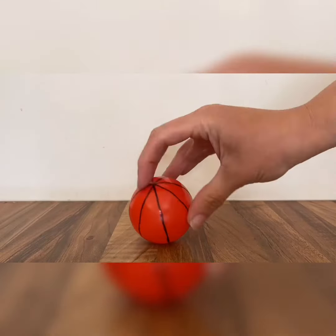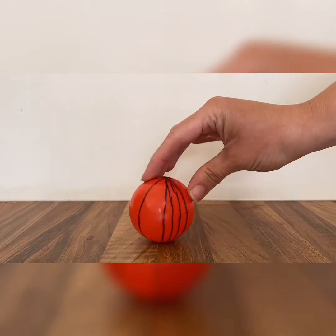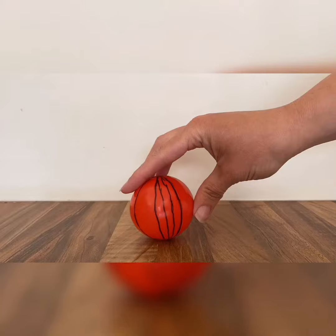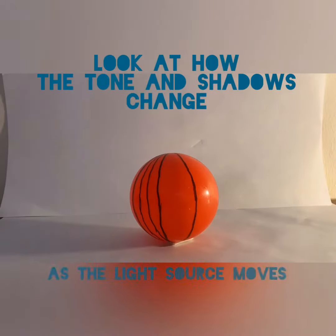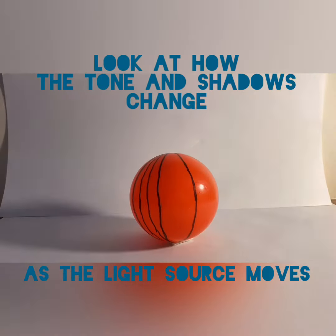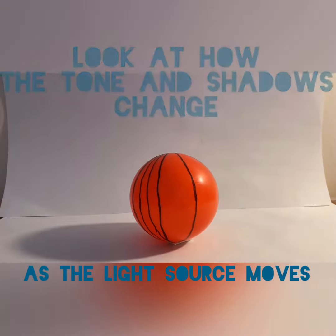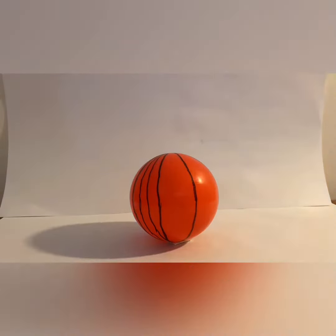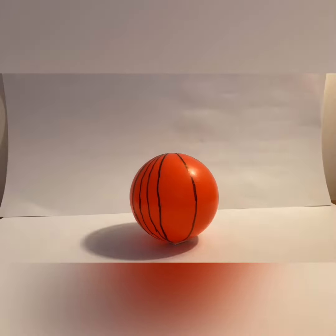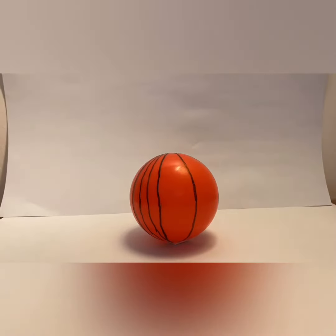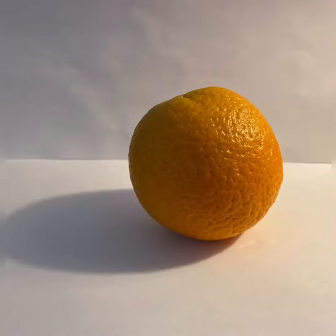A sphere is curved — all the lines from the top to the bottom curve around the shape. When using tone to shade an object, it helps to look at where the light and the shadow are falling. Look how it moves when the light changes.